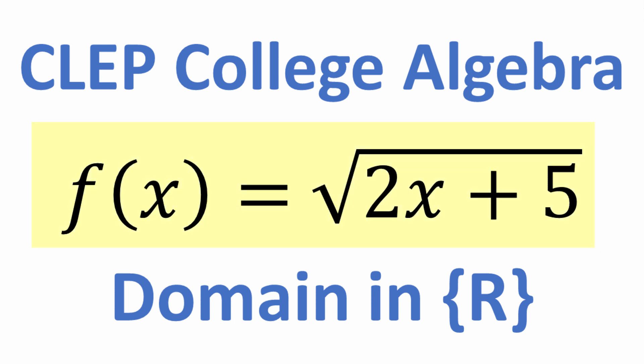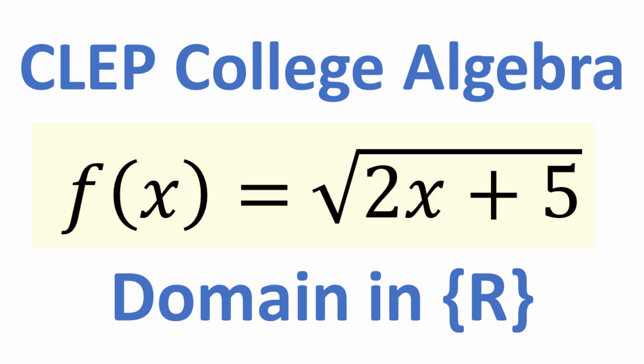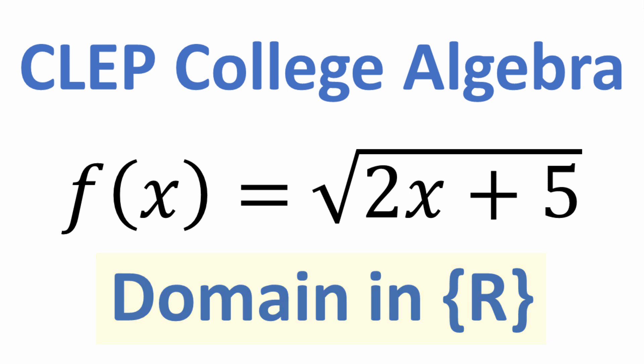What I have for you here is a practice problem. We have a function, and the function is f of x equals the square root of 2x plus 5. What we want to do is find the domain of this function under the set of real numbers. If you can figure this out, go ahead and put your answer in the comment section. I'll show you the correct answer in just a second, and we'll walk through the solution step by step.